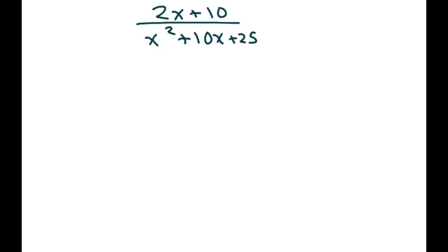The first thing you're going to notice is that we can factor out a 2 here in the numerator, and also the denominator has the form of a squared plus 2ab plus b squared. This is called a perfect square trinomial.